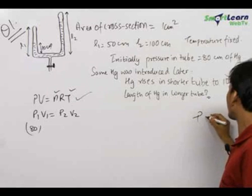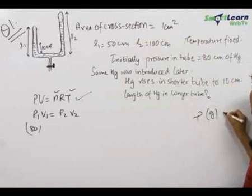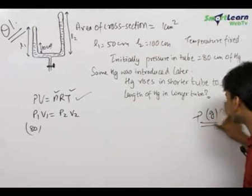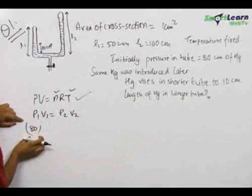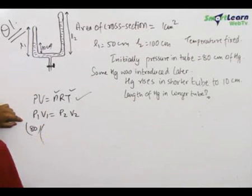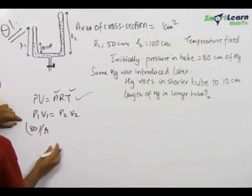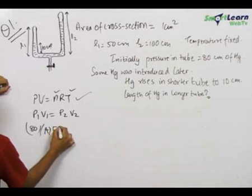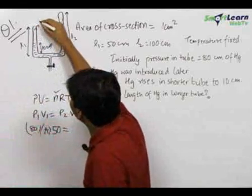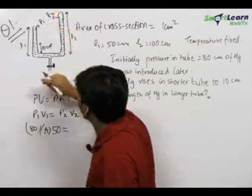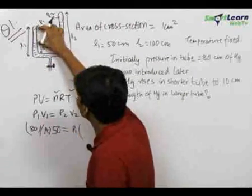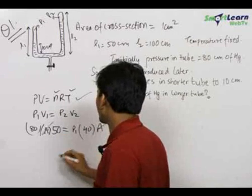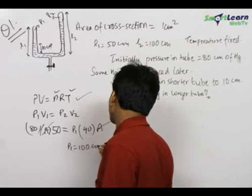This can always be written as density of mercury times g times 80, but we do not need this now. We keep it in terms of centimeters of mercury. The initial length L1 was 50, so: 80 × A × 50 = P1 × A × 40 (since mercury rose 10 cm, the remaining length is 40 centimeters). On solving this, we get P1 = 100 centimeters of mercury.